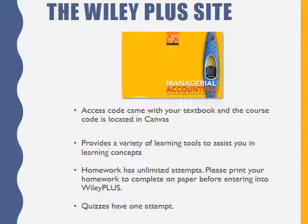Number 1: Homework. Homework should be printed out before attempting. For each homework, you're allowed unlimited attempts per question. Homework is completed at Wiley Plus, and there are 13 chapters, with 11 of those being used for the final grade.